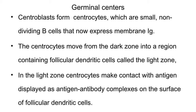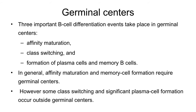These centrocytes move from the dark zone to the light zone. When the centrocytes come into the light zone, they come in contact with the antigen displayed on the surface of the dendritic cells in the form of antigen-antibody complexes. This interaction of the centrocyte with antigen-antibody complexes expressed on the dendritic cells is essential because certain differentiation mechanisms in the B cell occur after this contact — these events are affinity maturation, class switching, and the formation of plasma and memory cells.